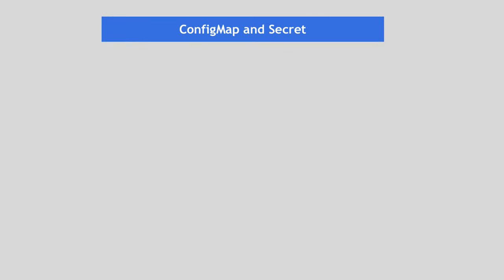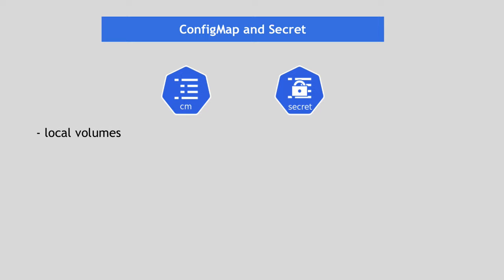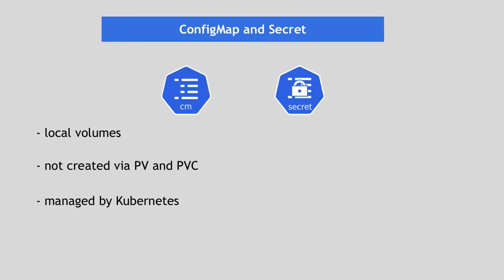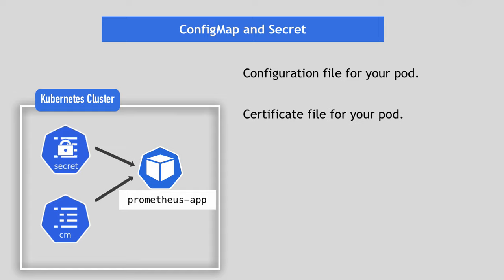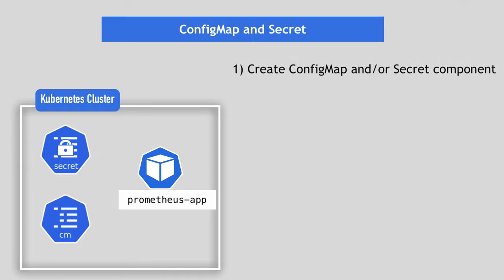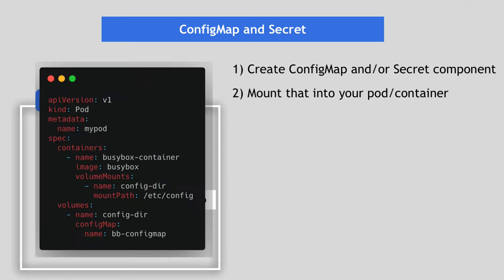There are two volume types that need to be mentioned separately because they're a bit different: config map and secret. Both are local volumes, but unlike the rest, these two aren't created via PV and PVC — they're their own components managed by Kubernetes itself. Consider a case where you need a configuration file for your Prometheus pod, a message broker like Mosquito, or a certificate file mounted inside your application. You create a config map or secret component and mount it into your pod and container the same way you would mount a persistent volume claim.